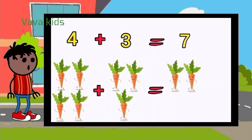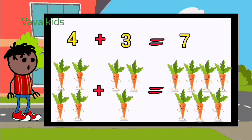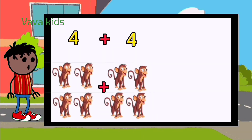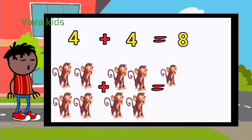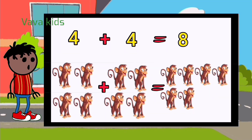Carrot: 4 plus 3 equal 7 — 1, 2, 3, 4, 5, 6, 7. Monkey: 4 plus 4 equal 8 — 1, 2, 3, 4, 5, 6, 7, 8.